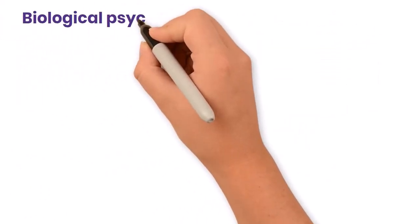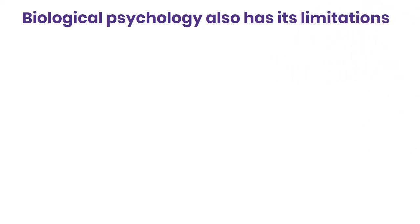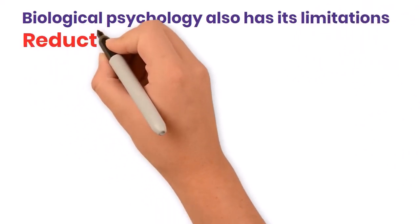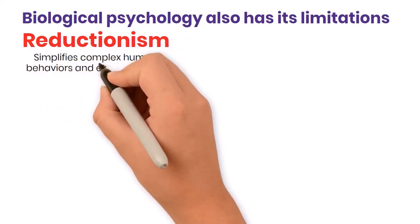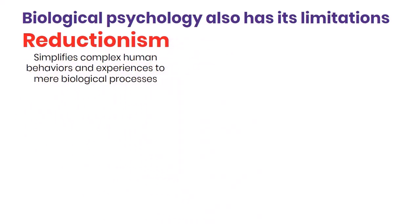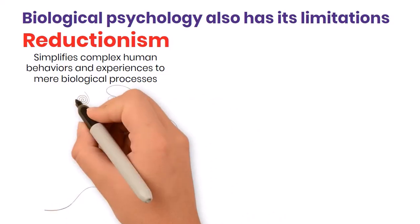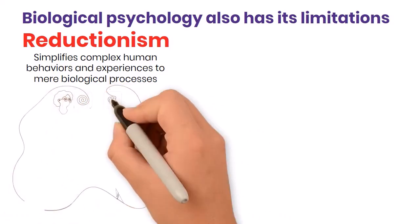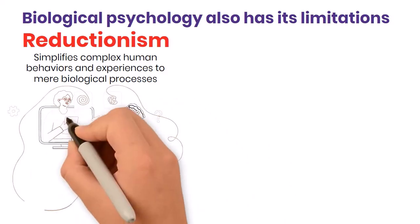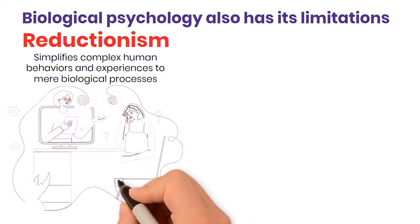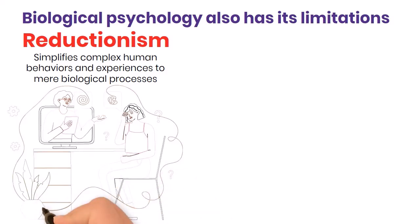However, biological psychology also has its limitations. One limitation is reductionism. This approach often simplifies complex human behaviors and experiences to mere biological processes. While biological factors are crucial, they are not the only influences on behavior. Environmental, social, and psychological factors also play significant roles, and reducing everything to biology can overlook these important elements.